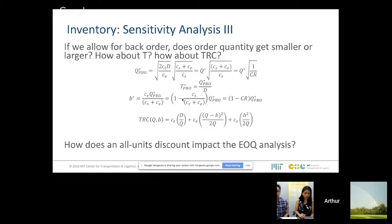So imagine I have a basic EOQ that does not allow for back orders. Now if I suddenly, the CEO says, okay, now we are going to allow for back orders. What is going to happen to my order quantity? Does it increase or decrease? Think about it for a few seconds.